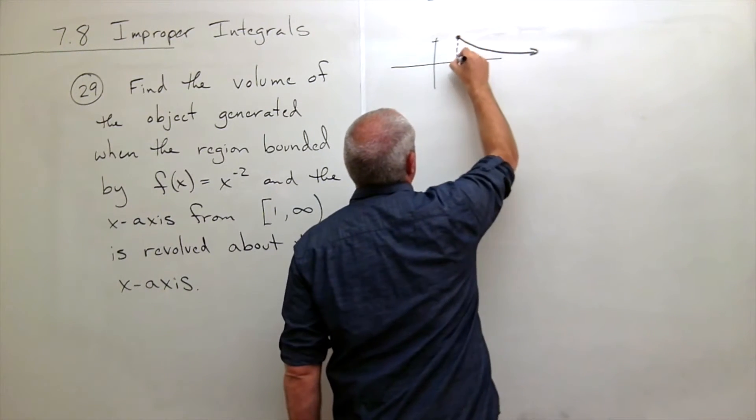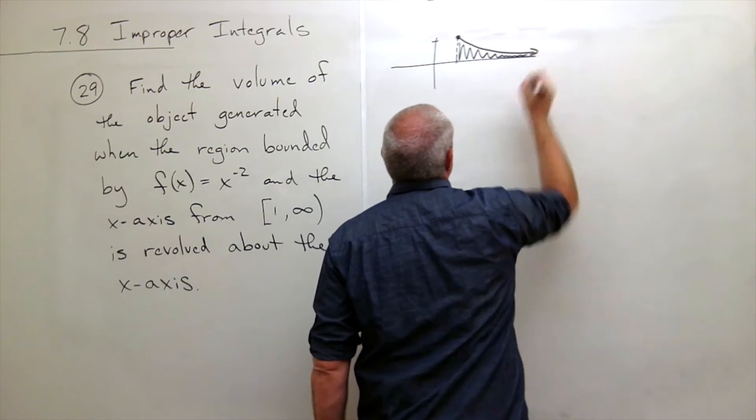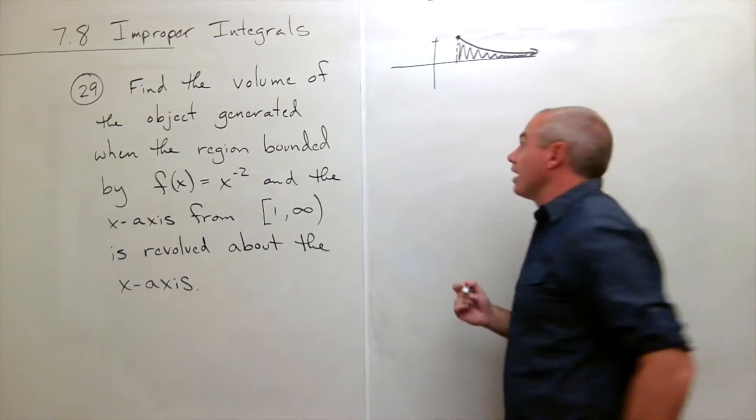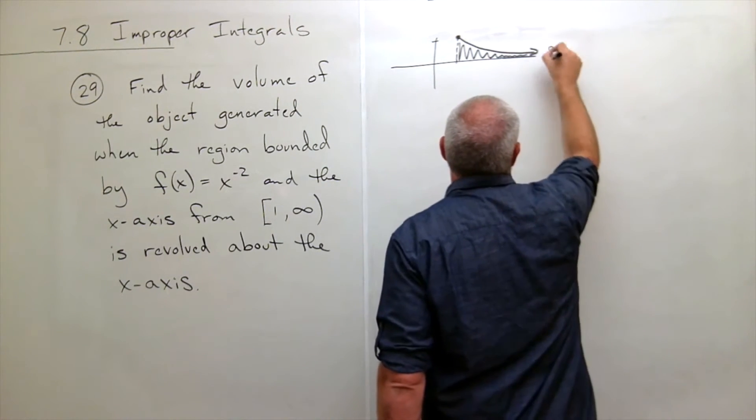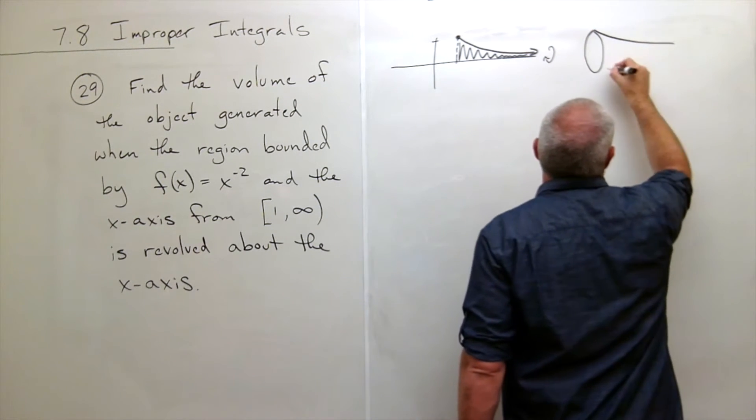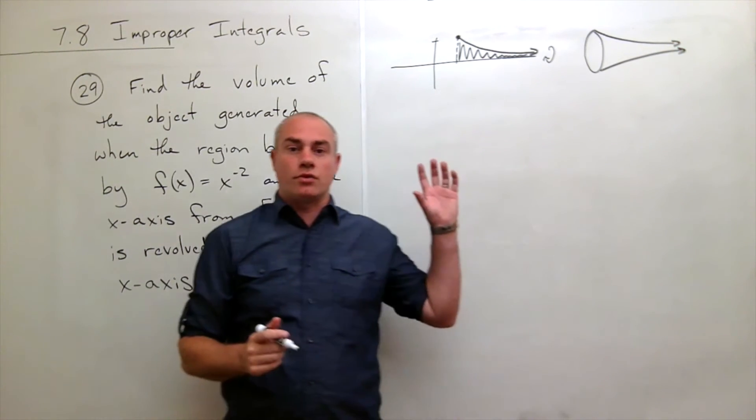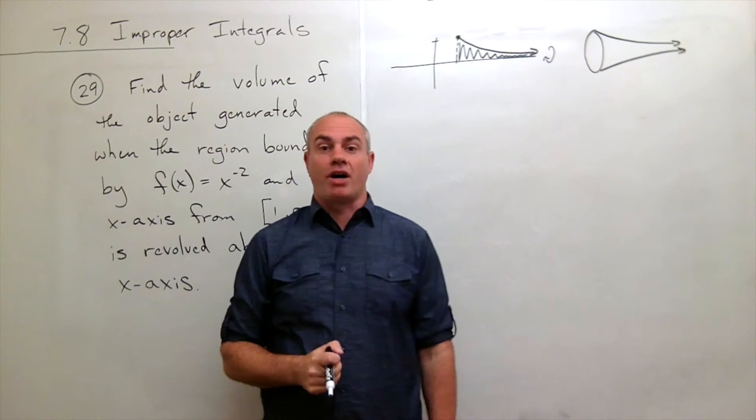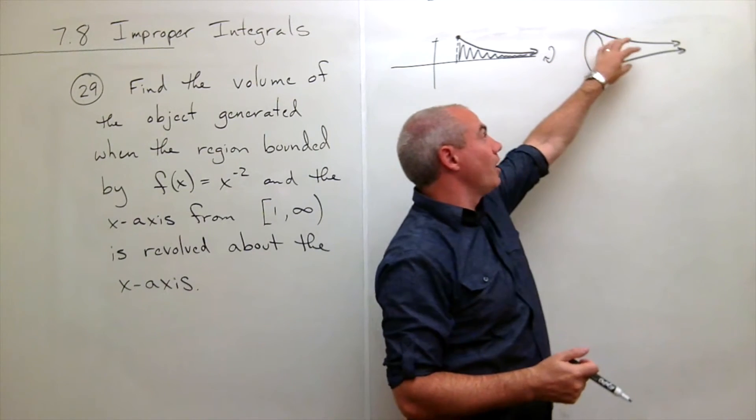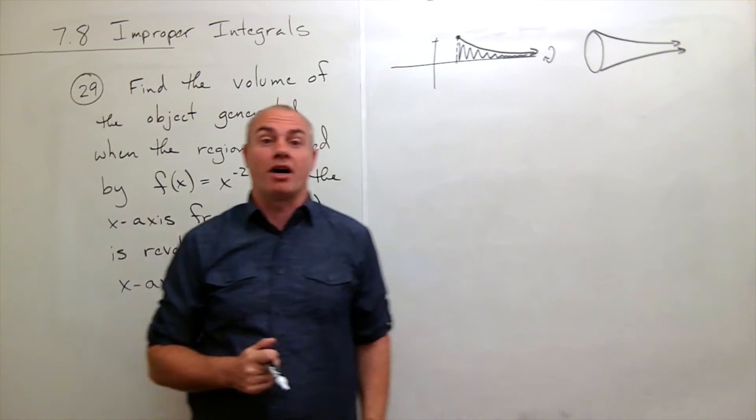So the region we're talking about here looks something like this. We want to take that region, spin it around the x-axis. When we do, we get kind of this horn shape where the horn goes out towards positive infinity. So what we really want here is we want to know what's the volume of this horn shape that goes on infinitely far towards positive infinity.